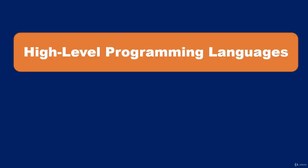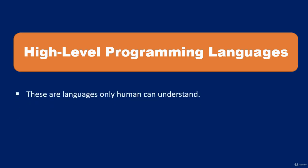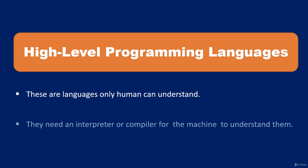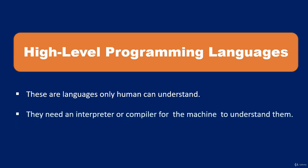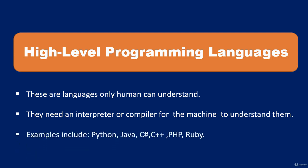What are high-level programming languages? These are languages that only humans can understand — computers can't understand them unless they are compiled or interpreted. They need an interpreter or a compiler for the machine to understand what the program is trying to do. Examples include Python, Java, C#, C++, PHP, Ruby, and many others.